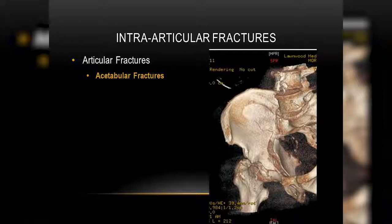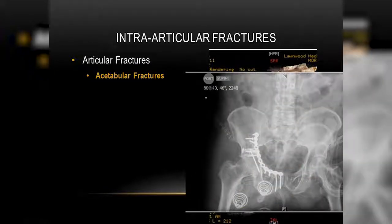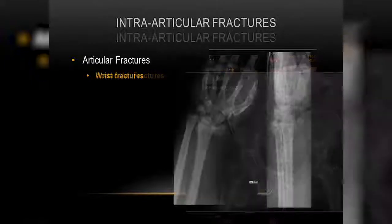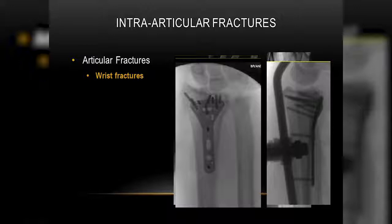Acetabular fractures — again, pretty common. You want all these pieces back together so you have limited risk of arthritis. This radius fracture we saw earlier — same thing. ORIF, plate, screws, primary bone healing, limited weight-bearing, early range of motion.